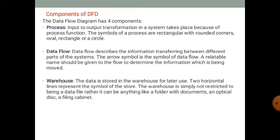Data Store (Warehouse): The data is stored in a warehouse for later use. Two horizontal lines represent the symbol of a data store. The data warehouse is not restricted to being just a data file — it can be anything like a folder with documents, an optical disk, or a filing cabinet. When data flows out of the data warehouse, it means data is being read; when data flows into the warehouse, it is called data entry or data operation.